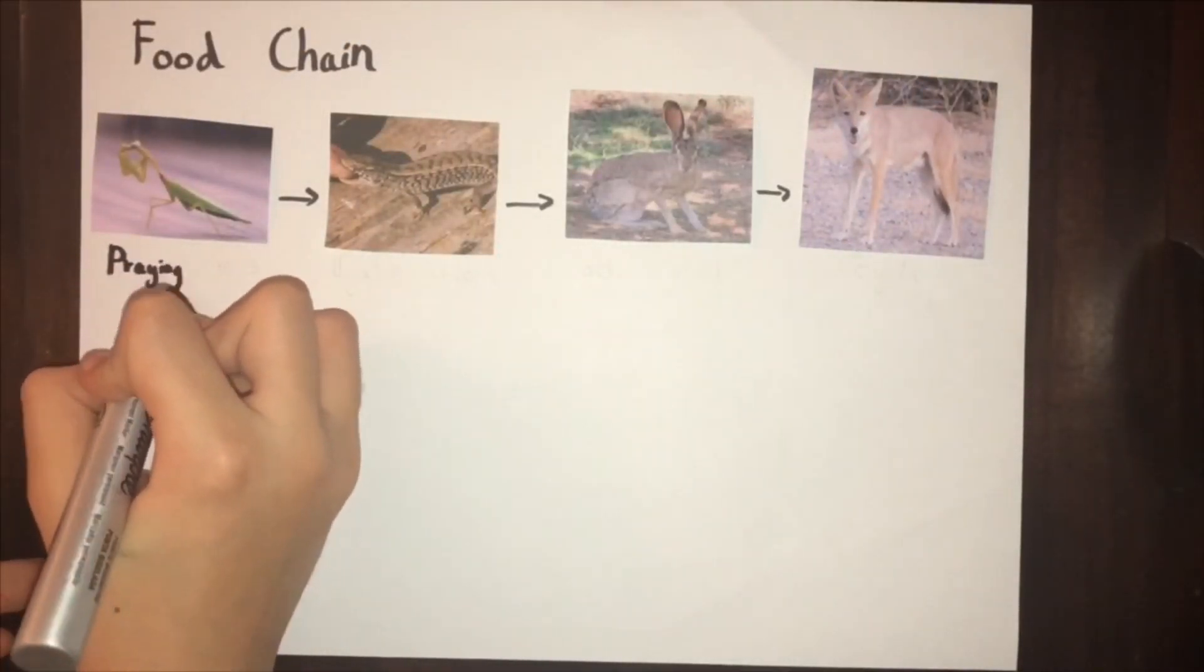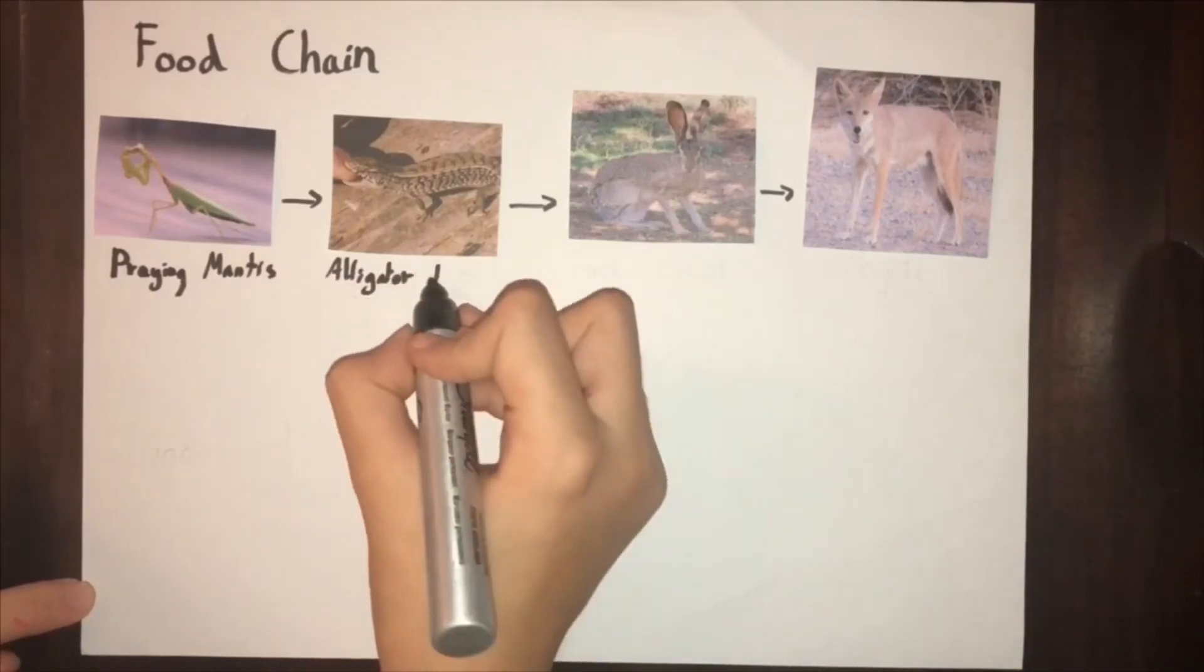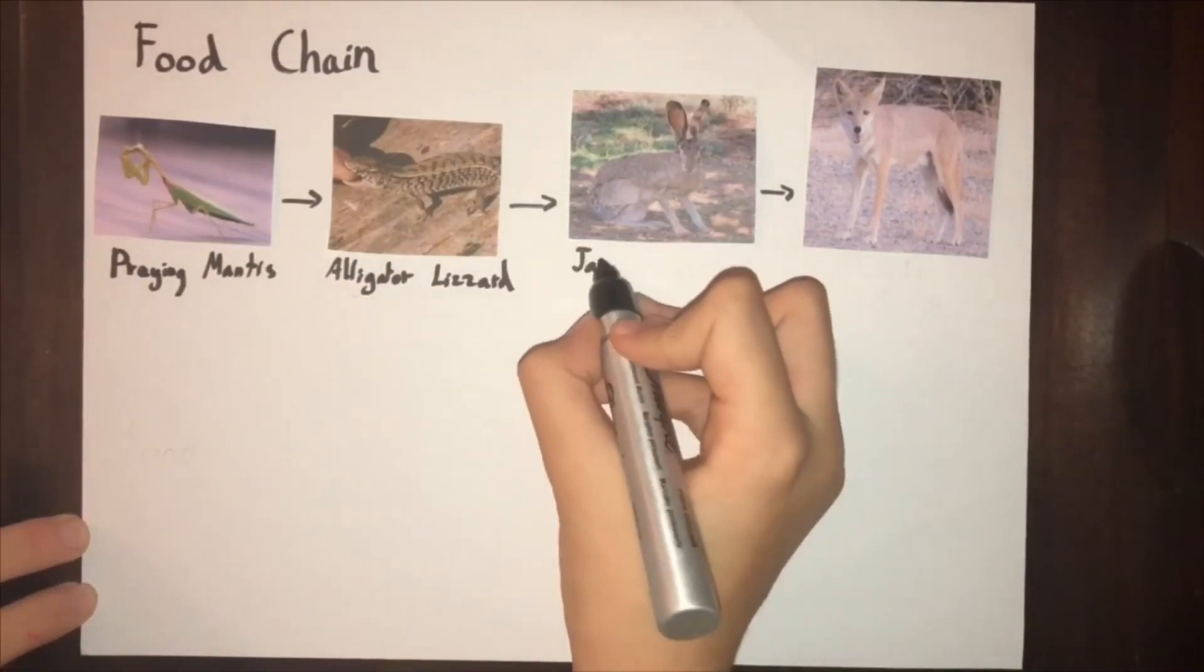The grass is a producer, the mantis is a consumer, the lizard is a secondary consumer, the rabbit is a tertiary consumer, and the coyote is the quaternary consumer.